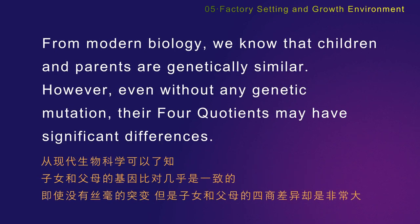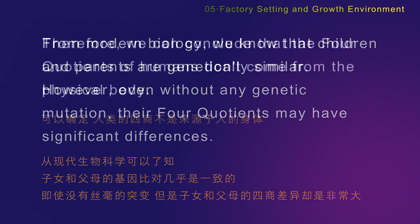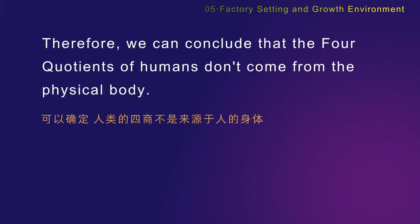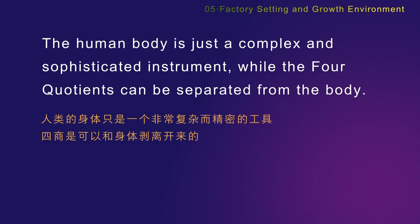From modern biology, we know that children and parents are genetically similar. However, even without any genetic mutation, their four quotients may have significant differences. Therefore, we can conclude that the four quotients of humans don't come from the physical body. The human body is just a complex and sophisticated instrument, while the four quotients can be separated from the body.